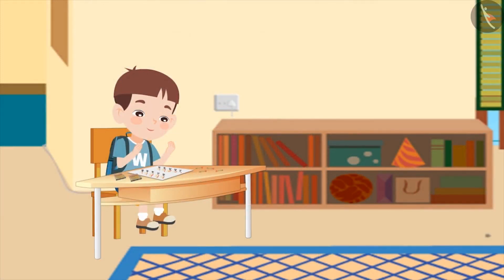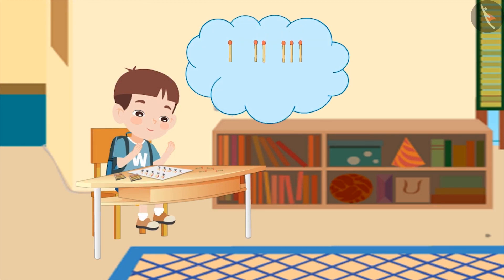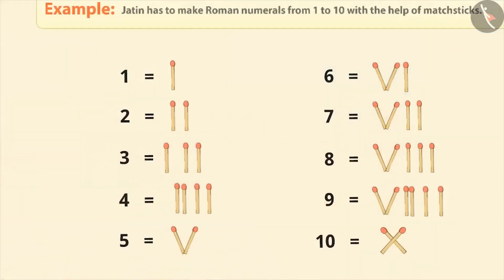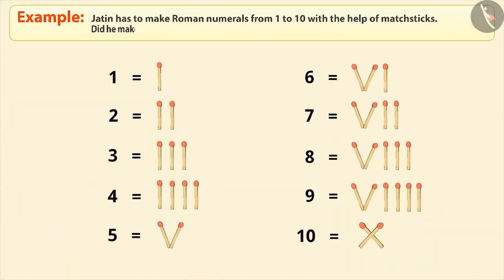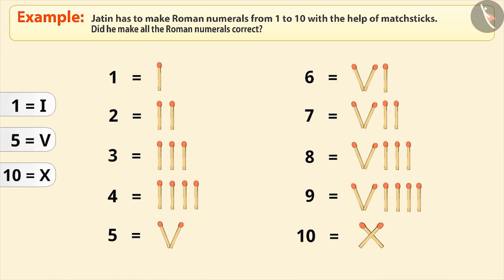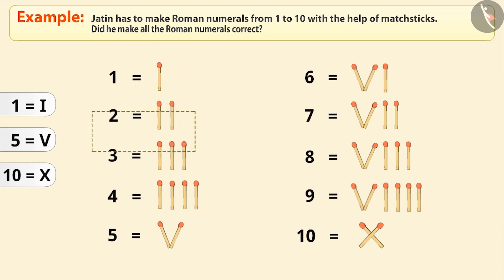Jatin was doing his holiday homework. He has to make Roman numerals from 1 to 10 with the help of math sticks. Look at the chart he has prepared. Has he made all the Roman numerals correctly? We have learnt to write the symbols of 1, 5 and 10. 2 is written by repeating the symbol of 1 two times, and 3 is written by repeating the symbol of 1 three times.